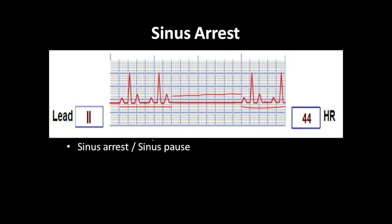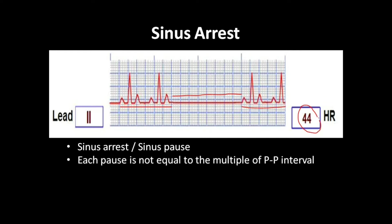In lead 2, we can see a sinus arrest or a sinus pause. The heart rate will be less than 50 beats per minute. Each pause is not equal to a multiple of the PP interval. If you calculate here, the PP interval is 10 big squares and 4 small squares. In this case, the PP interval here is 3 big squares and 3 small squares.